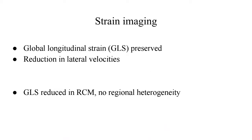Regarding strain imaging: the global longitudinal strain in constrictive pericarditis is preserved, and there may be reduction in lateral velocities — as was seen in our patient. In restrictive cardiomyopathy, the global longitudinal strain is significantly reduced, and there is no regional heterogeneity, unlike in constrictive pericarditis where regional heterogeneity can be seen.